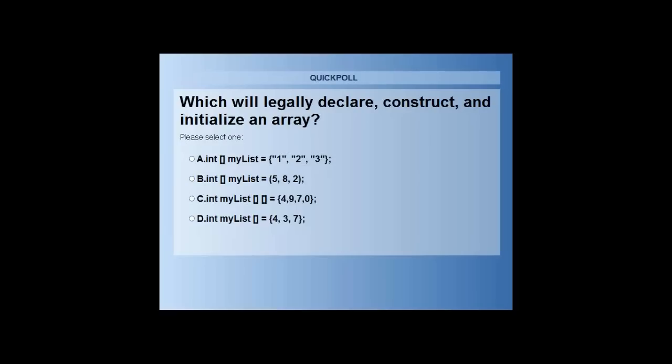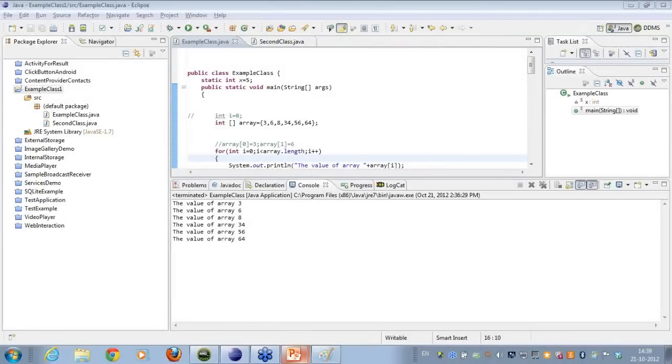Let me see all of the options here. It is int array my list 1, 2, 3, which people have gone for option A, which is 25%, which is not the right answer. Then we have int array my list with circular brackets, which is 5, 8, 2. It is also not the correct option. And then I have the third, the last option, which is option D: int my list array 4, 3, 7. So this is the correct answer.